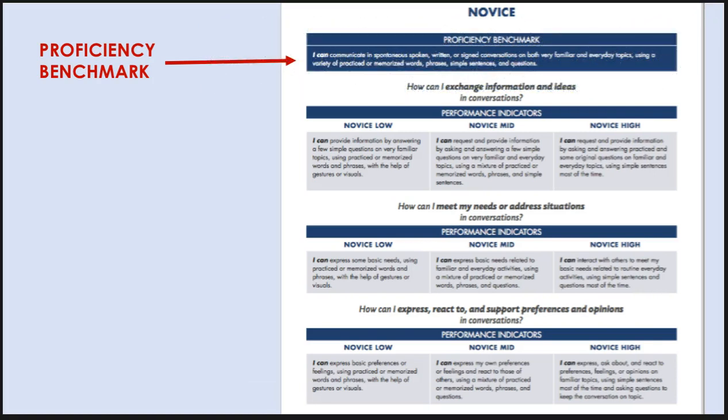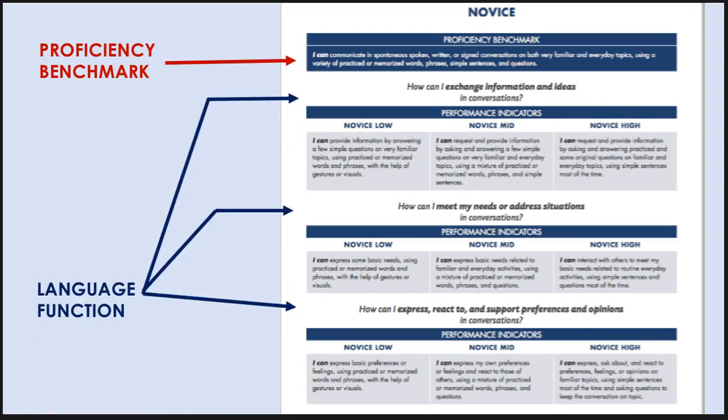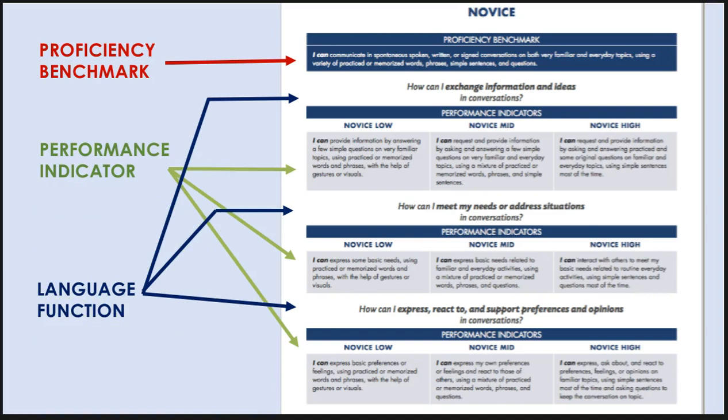New to the revised Can-Do Statements are the questions which incorporate the language function, showing how the language will be used in real-world context. There are three functions, each of which covers an aspect of the interpersonal mode. The performance indicators describe how well a learner should complete a task to achieve each sub-level — low, mid, or high.